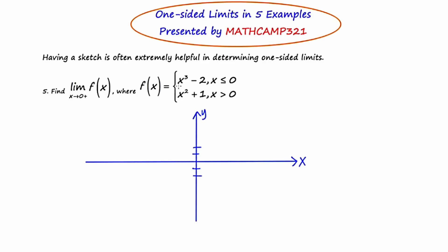The top piece of this piecewise function is x cubed minus 2. The graph for x cubed is that of a wiggle, and the minus 2 on the outside brings that wiggle down 2 units. We're only drawing the portion of it that's less than or equal to 0, so the wiggle goes to the left. The bottom piece is x squared plus 1. The graph of x squared looks like a parabola, and the plus 1 shifts the parabola up one unit. The parabola lives only for those x values greater than 0.